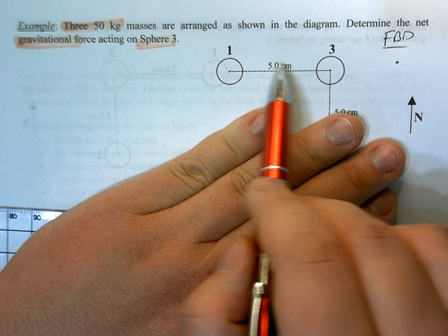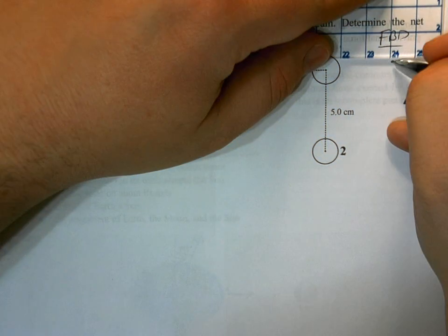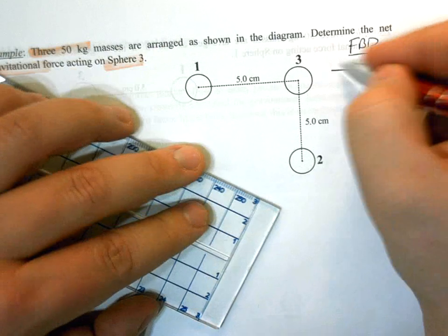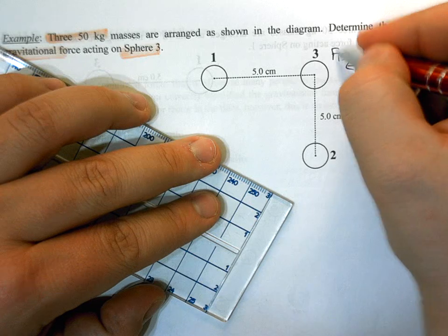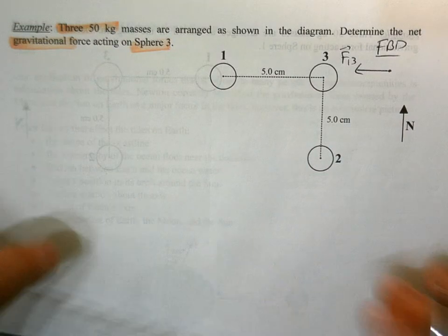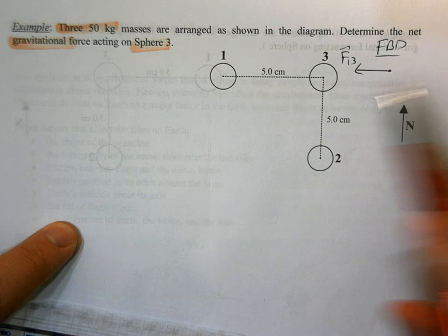Now ignoring 2 for a second, because of 1, sphere 3 is going to want to be pulled towards 1. So we're going to say that the force of 1 on 3 is going to go left here, or in this case, since we're told this is north, it's going west.